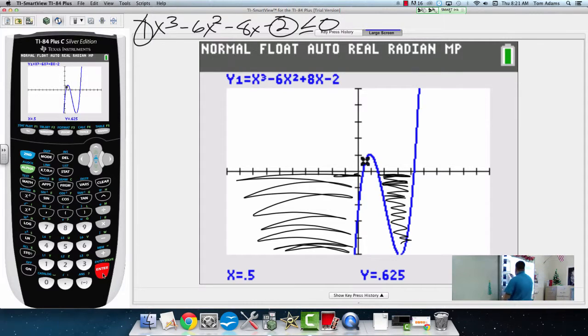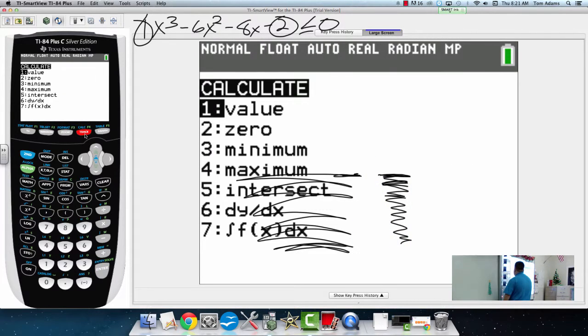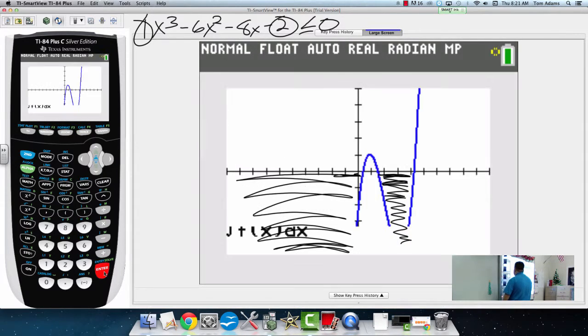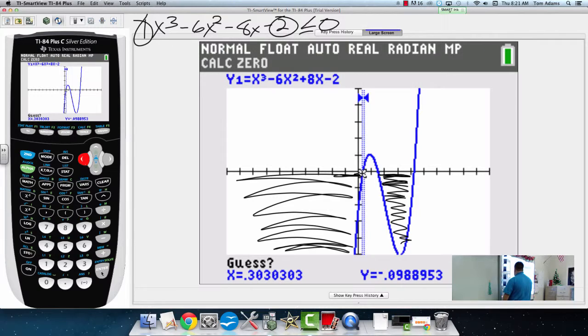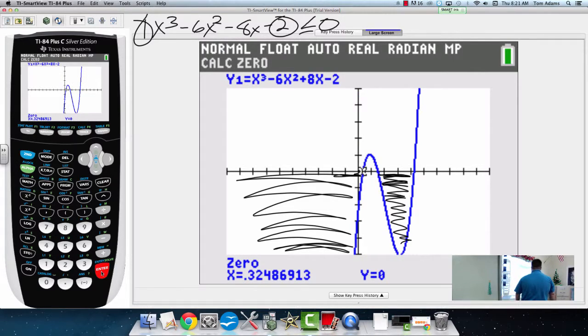I've got to find my zeros. So I'm going to hit second trace, and go to zero. I'm going to go a little bit to the left, hit enter, a little bit to the right, hit enter, guess, guess. And my first zero is 0.324. So x is approximately 0.325 if we round it.